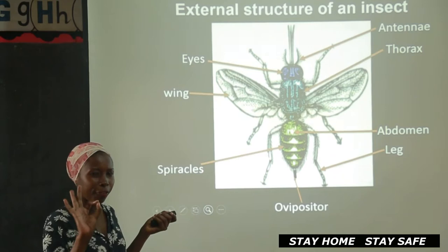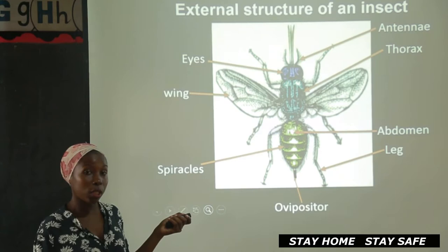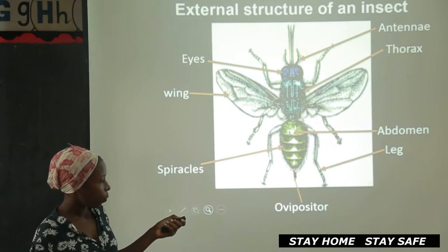It has the abdomen. The leg — I am saying leg because my arrow is pointing at only one leg, but it has legs. And the ovipositor. The ovipositor is found down here, which is used for laying eggs.